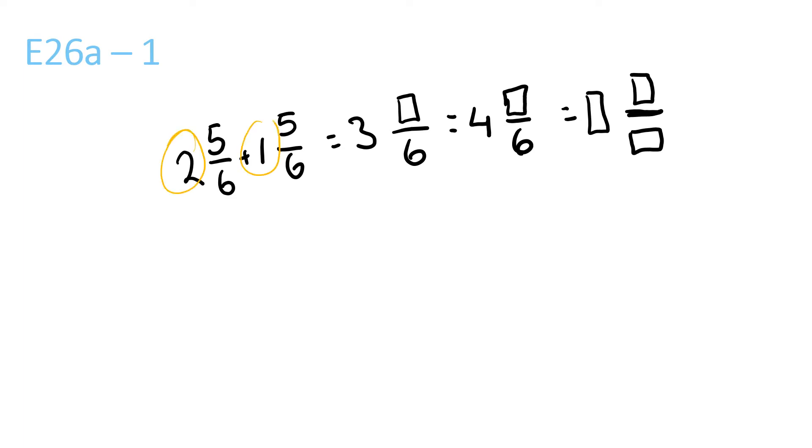So first, 2 plus 1 equals 3, and 5 plus 5 equals 10, and the 6 stays the same. Now 6 goes into 10 once with a remainder of 4. So you have 1 and 4 over 6 plus 3, which equals 4 and 4 over 6.